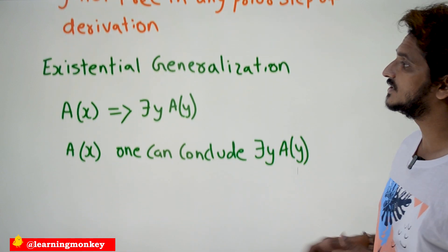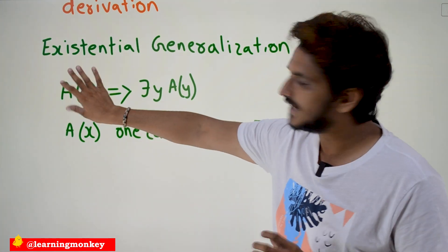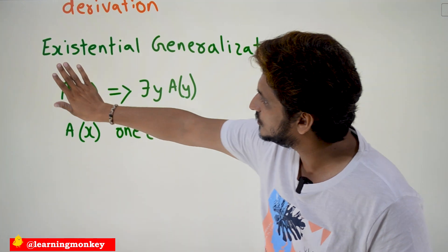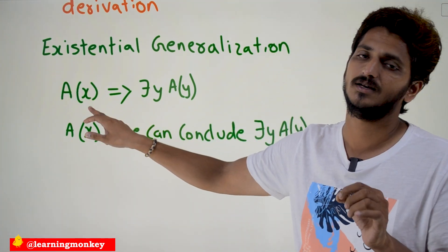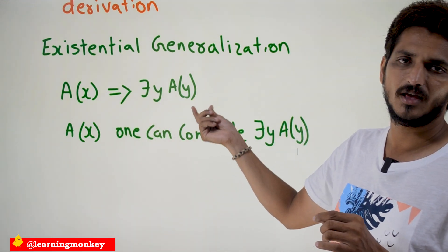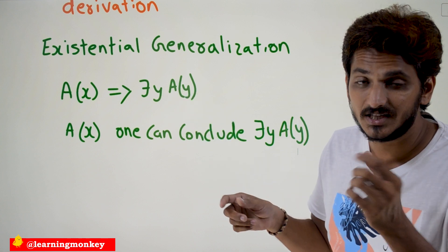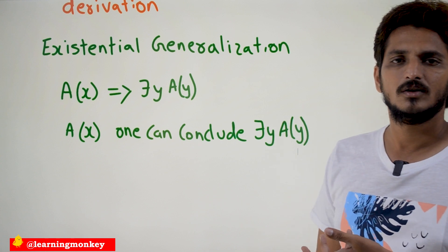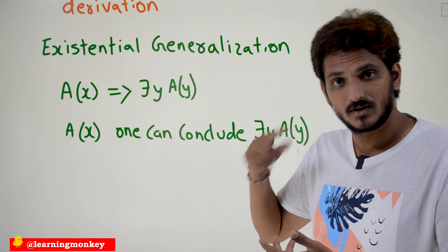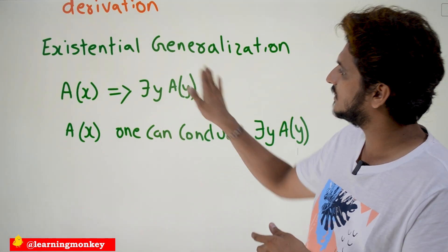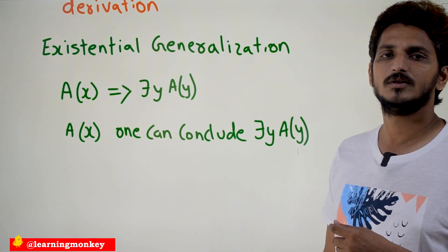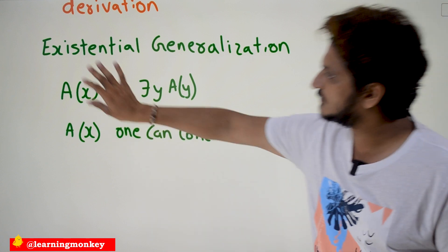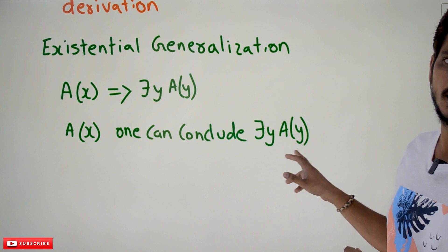Now coming to existential generalization. If someone says A(x) is true, then we can tautologically imply there exists y, A(y). Meaning, if A is true for x, then you can conclude there exists y, A(y) — at least it is true for any one value. It was already given that it is true for x, so you can conclude there exists y such that A(y) is true. A(x) tautologically implies there exists y, A(y).